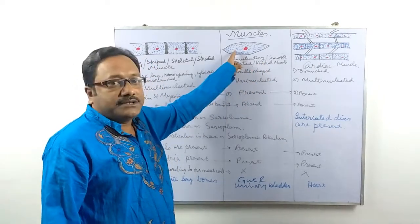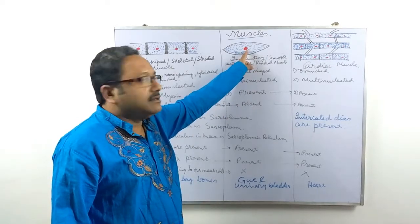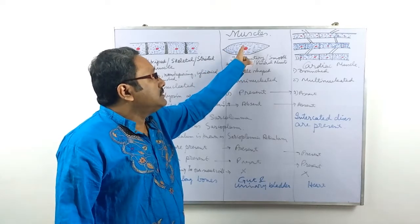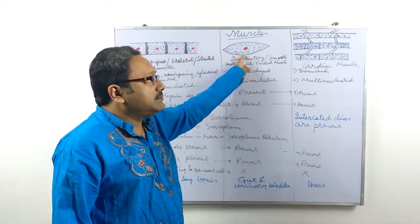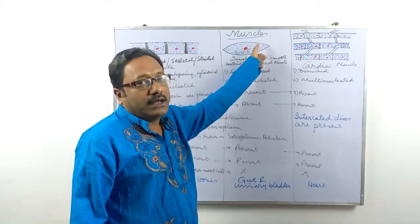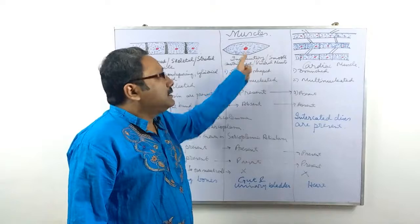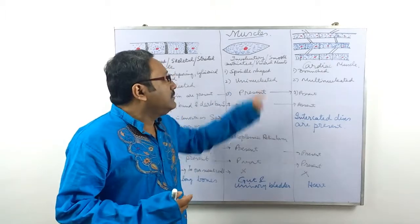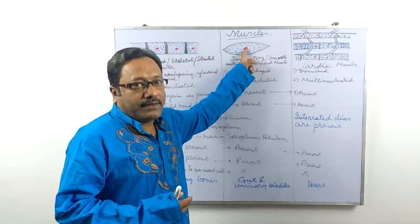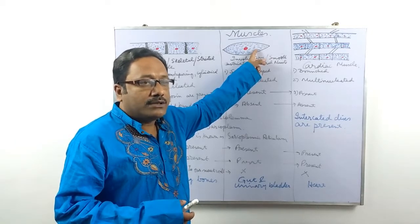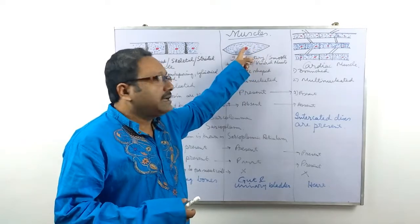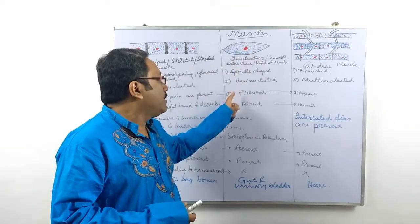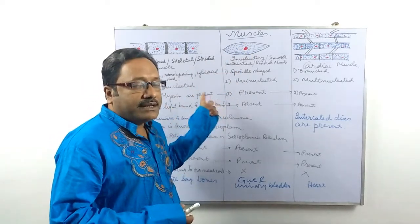Point number one: it is spindle-shaped. Point number two: uninucleated — one nucleus is present within the protoplasm of the muscle cell. The nucleus is red and the protoplasm or cytoplasm is blue in colour, because when stained with hematoxylin and eosin, the eosin (red) is taken by the nucleus and the cytoplasm takes hematoxylin (blue). Point number three: actin and myosin proteins are present.